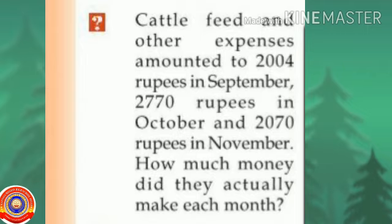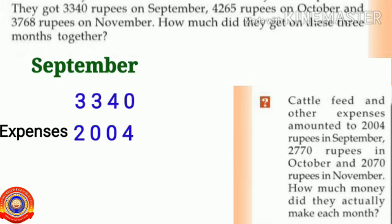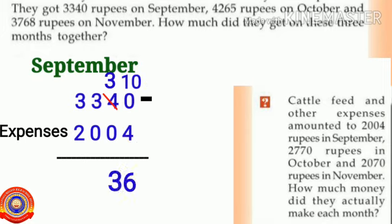Amal's family got 3340 rupees in September, but they had to spend 2004 rupees as expenses. To find the amount they actually made in September, subtract 2004 from 3340: we can't subtract 4 from 0, so borrow — 0 becomes 10, 4 becomes 3. 10 minus 4 is 6, 3 minus 0 is 3, 3 minus 0 is 3, and 3 minus 2 is 1. The answer is 1336.